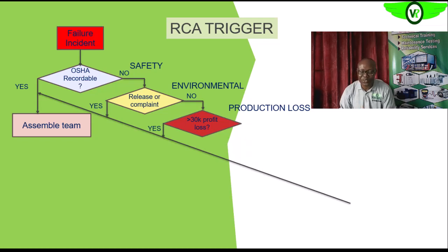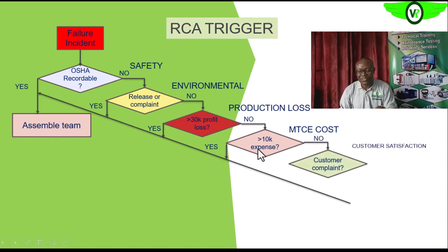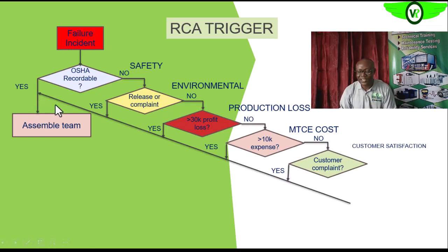If the cost is low — cost to production, cost to our revenue and production output — we then ask: is the maintenance cost high, more than usual? If it is high, we assemble an RCA team. If the maintenance cost is not that high, we look at how the failure affects our output and our integrity in the eyes of our clients. If it does affect that, then we need to assemble an RCA team to conduct the RCA analysis.